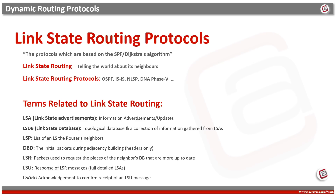DBD is the initial packet during adjacency building which describes the contents of the topological database. They do not include the full routing table — they include LSA headers only. LSRs, or Link State Requests, are packets used to request pieces of information from a neighbor's database that are more up-to-date.